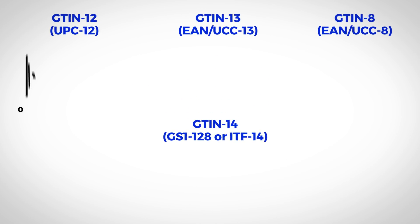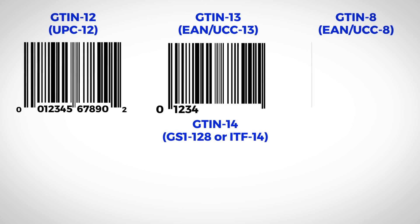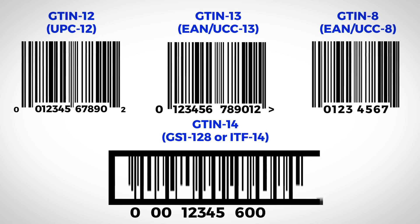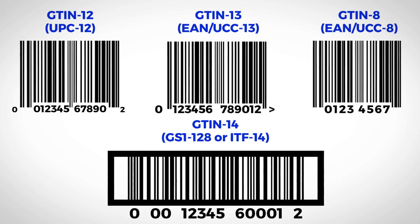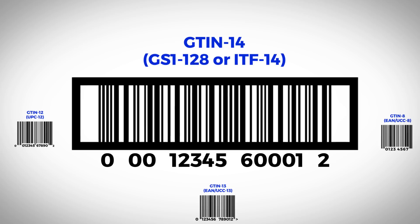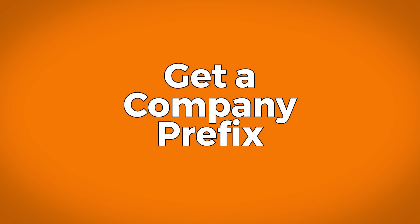All right, let's head over to GS1. I'll do my best to explain this as simply as possible. Here are the different variations of UPC barcodes — the number of digits varies per country, but for our purposes we'll be using a GTIN-14. The GS1 website, like Seller Central, is a bit complicated to navigate, but the good news is there are only two steps we need to follow. Step one: get our company prefix.